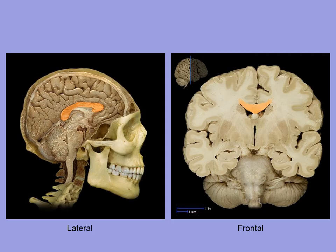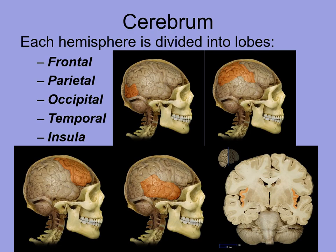Each hemisphere is subdivided into lobes — there are five different lobes. Regional anatomical terminology becomes helpful here. You have the frontal lobe, the parietal lobe, the occipital lobe, the temporal lobe, and then beneath those is the insula, which is deeper to the others.